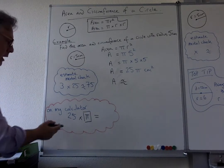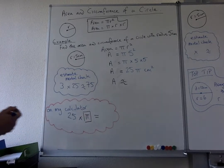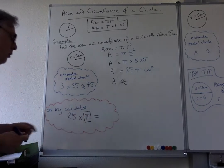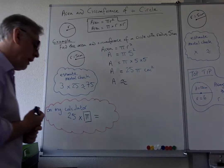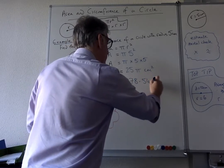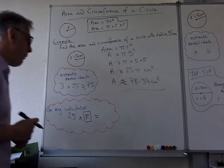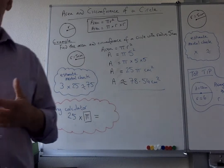So on my calculator, I'm going to put 25 times π equals and see what I get. Your calculator might do it in a different order or the buttons are slightly different, so you'll write down the instructions for your calculator. And when I've done that, I found the answer was 78.54 centimeters squared. And as you see, it's close to 75, so I'm very confident that I've got the right answer.